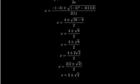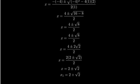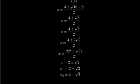This means we have two solutions to our original equation. The first solution is x equals 2 plus the square root of 2, and the second solution is x equals 2 minus the square root of 2.